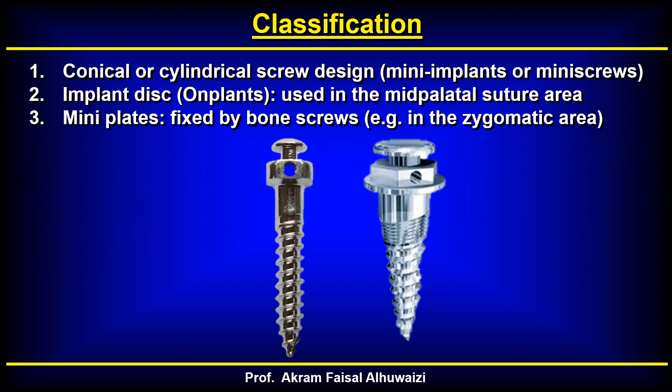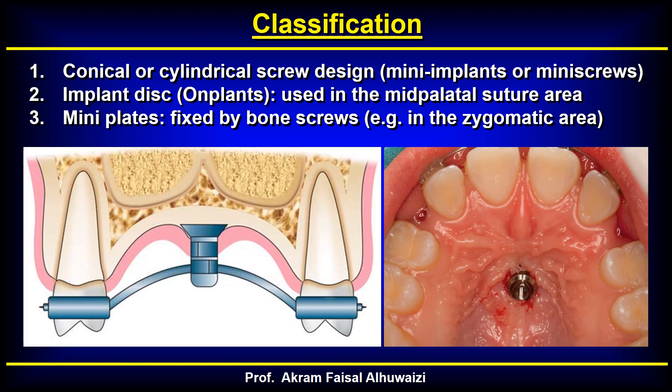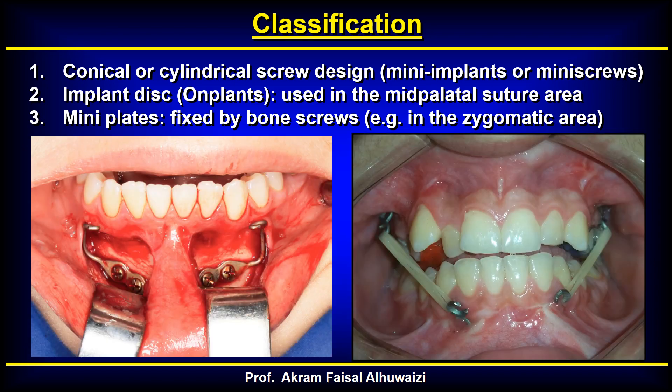Regarding classification, TADs are generally classified into three forms: the conical or cylindrical screw design, called mini implants or mini screws; the second type is implant discs, like onplants, used in the palatal region; and the third type is mini plates, fixed by bone screws to the bone, with an attachment going outside the gingiva for attachment of elastics.